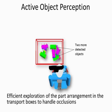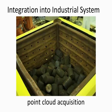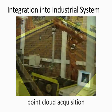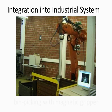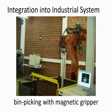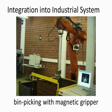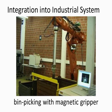At the new view pose, the robot detects two more objects that were partially occluded in the first scan. We tested our system in an industrial bin picking scenario. Point clouds are acquired with a laser sensor. The objects are picked out of the box by an ABB robot equipped with a magnetic gripper.